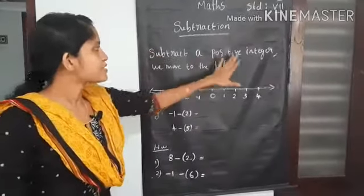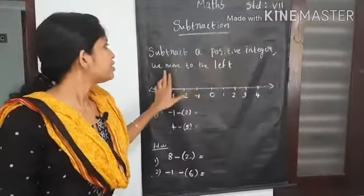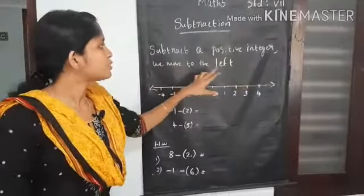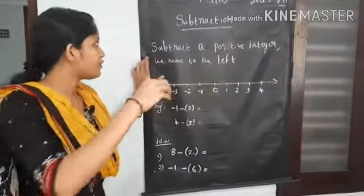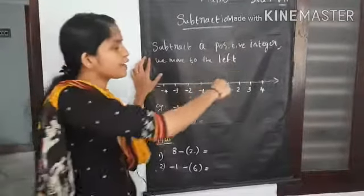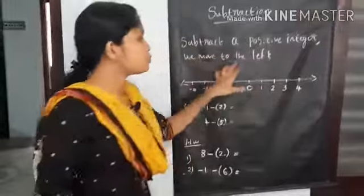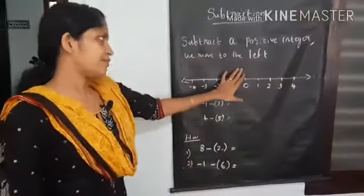When we subtract a positive integer, we move to the left.